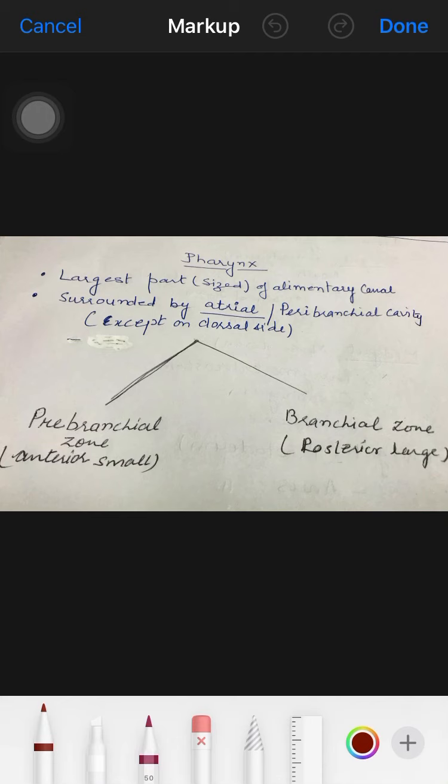This pharynx is surrounded by the atrium or peribranchial cavity except on the dorsal side. The pharynx shows two very unequal regions: the anterior very small prebranchial zone and the posterior large branchial zone. These prebranchial zone and branchial zone are separated by the perifaryngeal band.